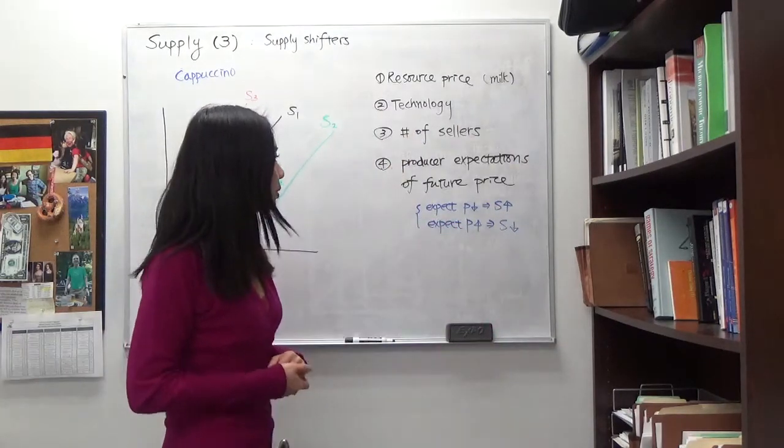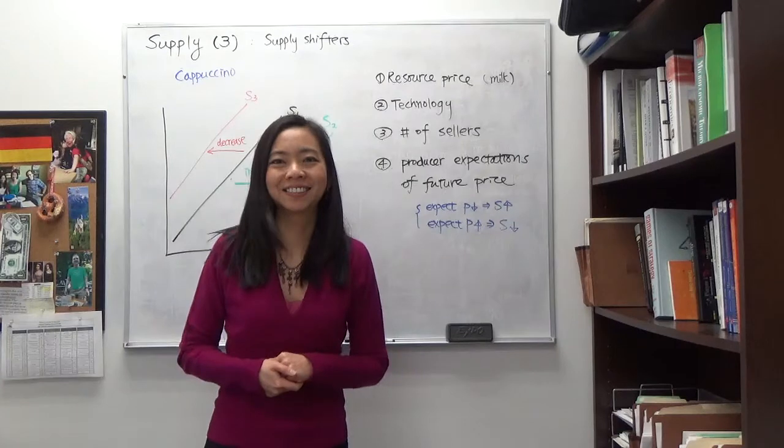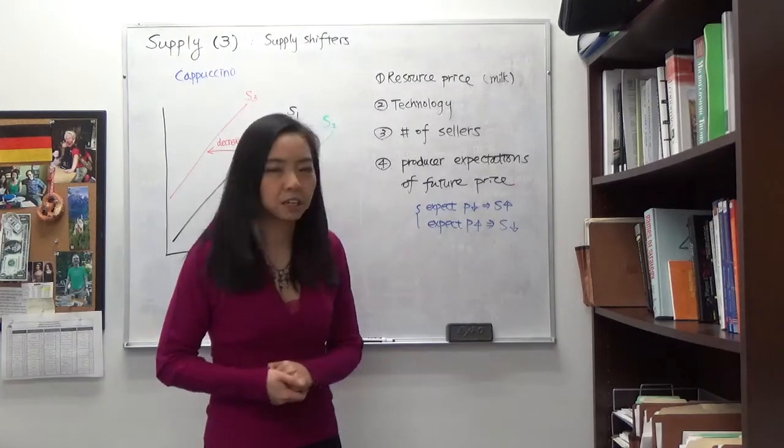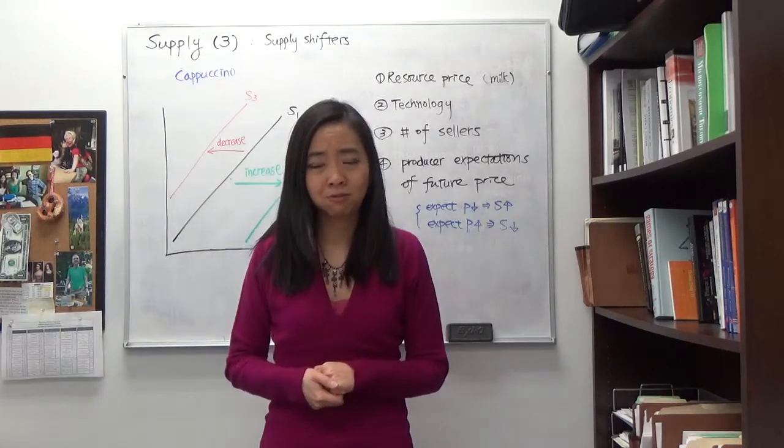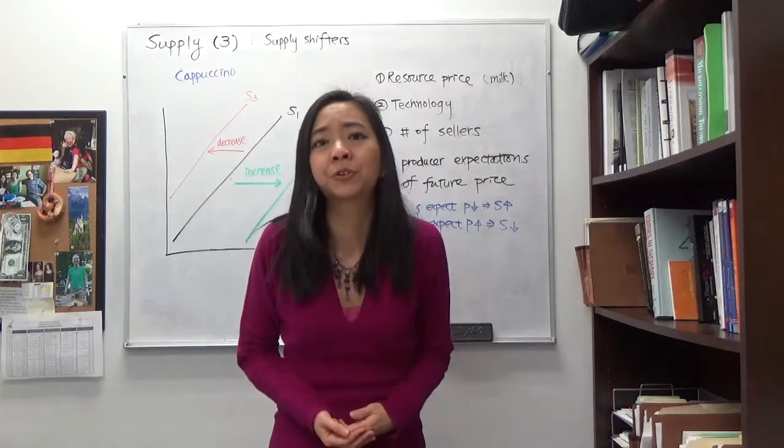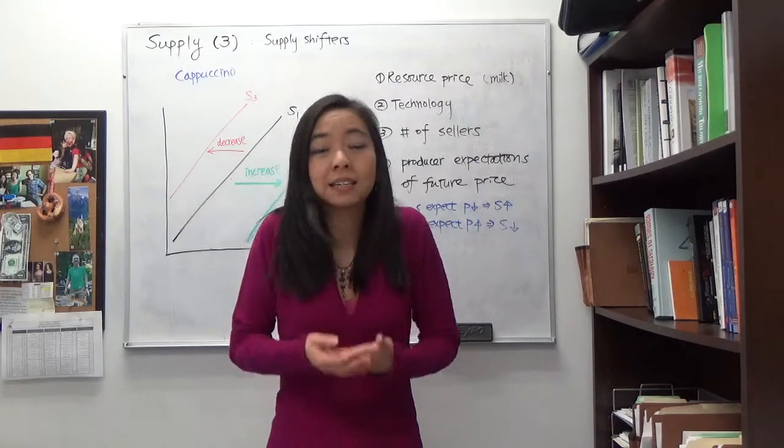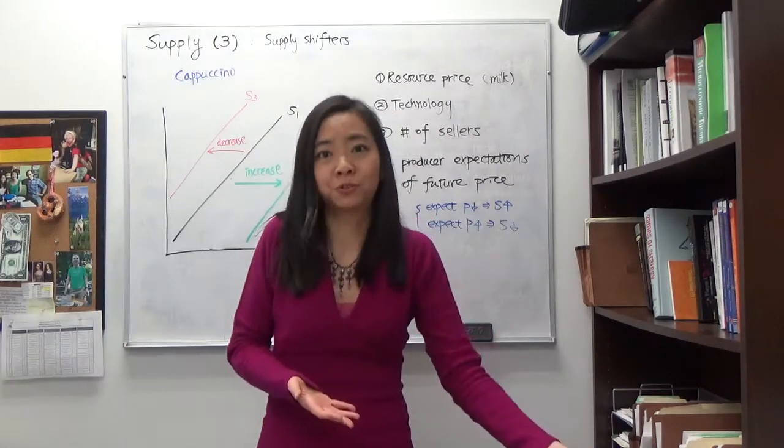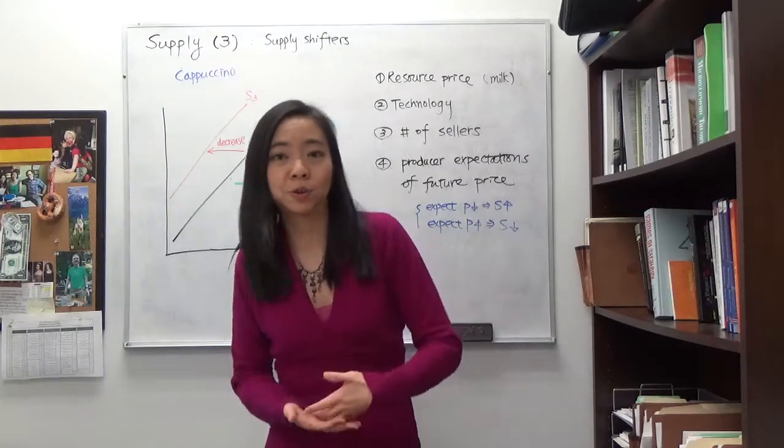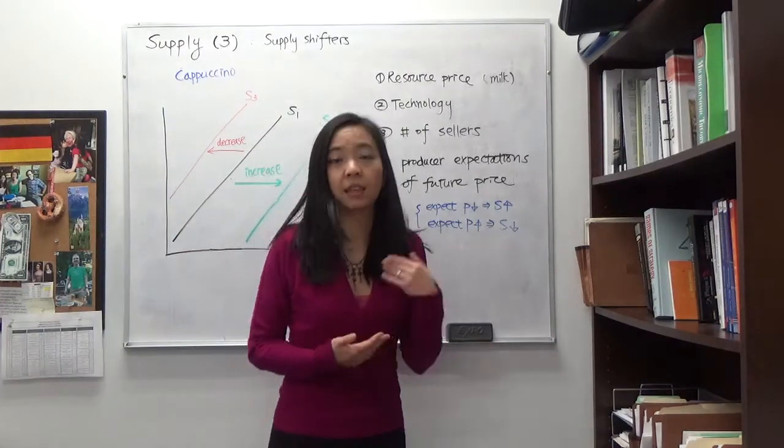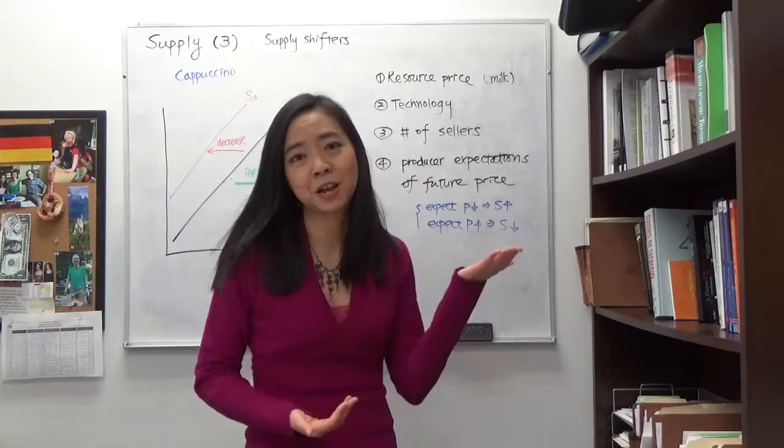And the fourth one is producer expectations of future price. So think about this. If you expect the price to go down later and you're a seller of a certain good, then you want to quickly dump it before the price goes down. So if you expect the price to go down, then your supply is going to go up now.